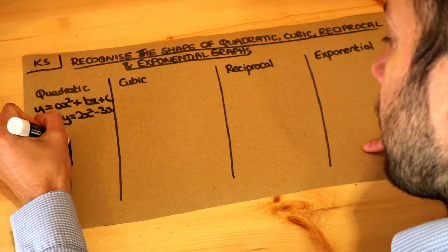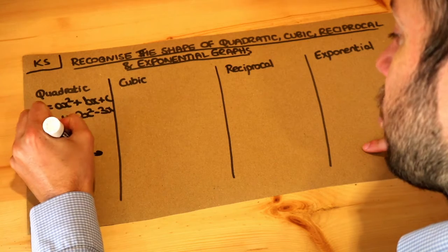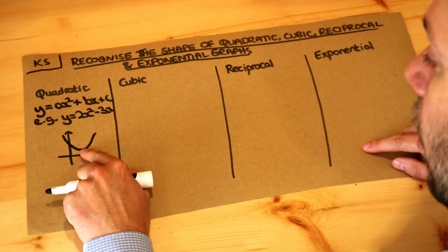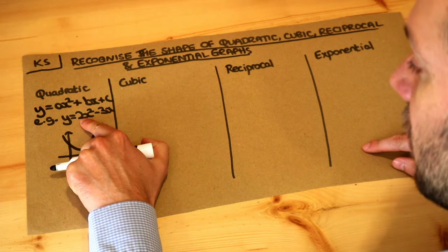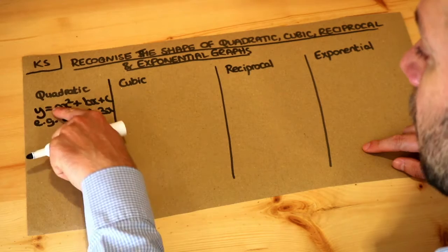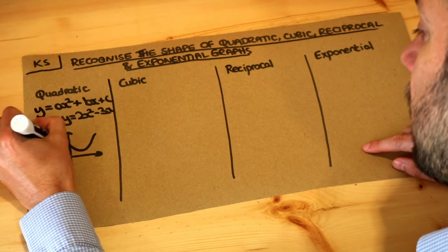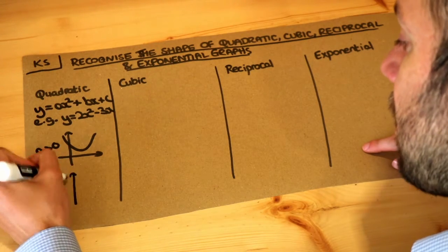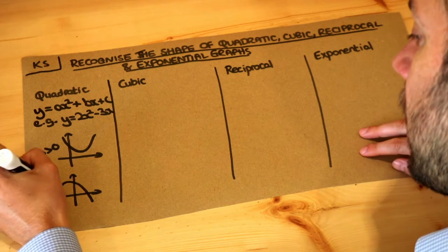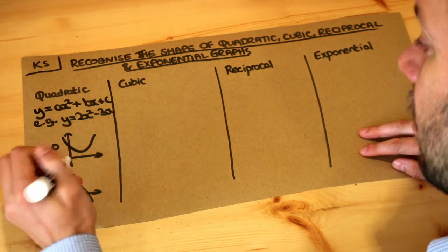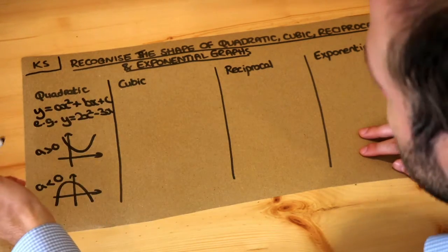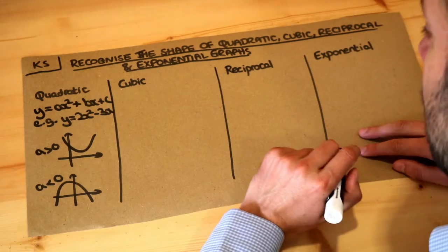You get one of two shapes: either a smiley face shape, and that will occur whenever the number in front of the x squared is positive. So if a is greater than zero you get that smiley face shape. And if a is less than zero then you get a hill shape, and that will be when a is less than zero — for example if you're sketching y equals minus x squared or minus 3x squared plus 2x.